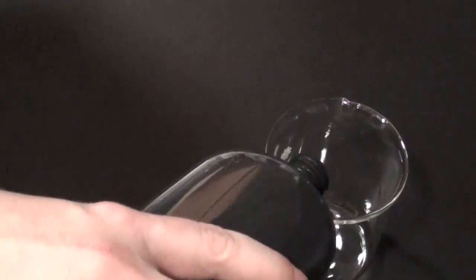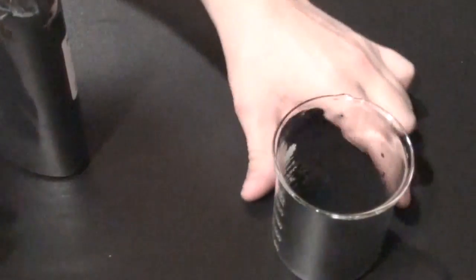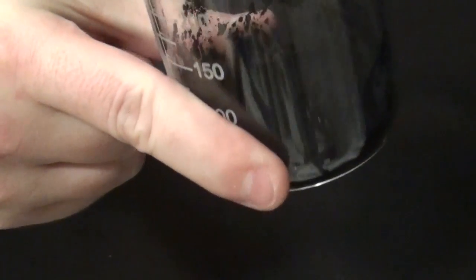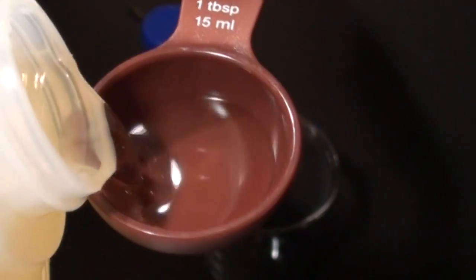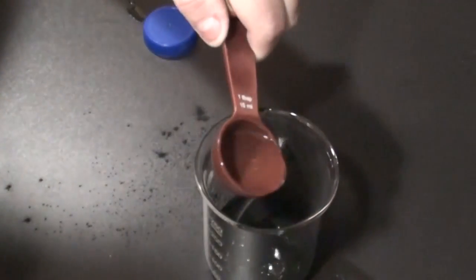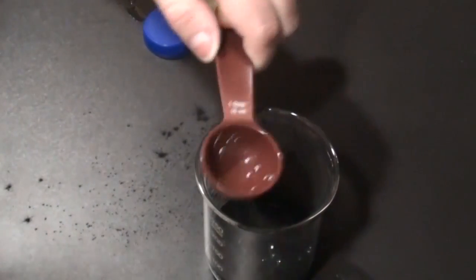Now the first thing we're going to do is pour the toner into a cup. We need about 50 milliliters of this. Go ahead, have a look, it's all there. Now we're going to put about two tablespoons of vegetable oil into that cup as well. You may need a little bit more than this, depends on how much ink you used.